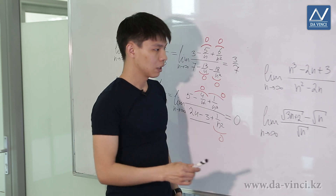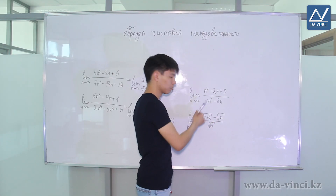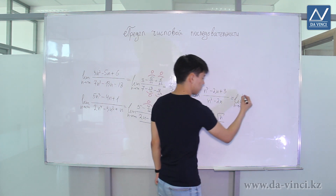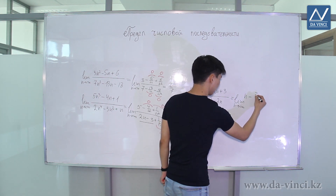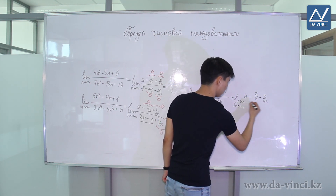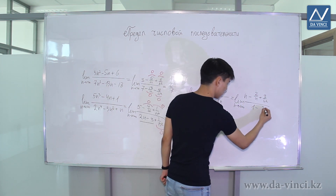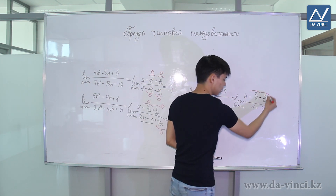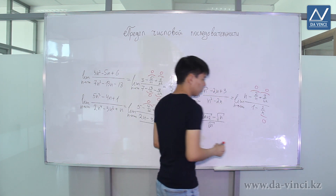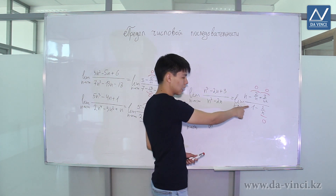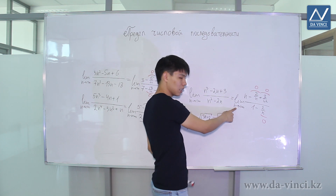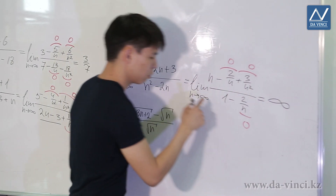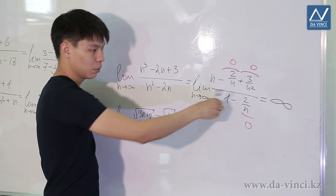For the third example we divide by N². The numerator becomes (N−2)/N² + 3, giving 1/N − 2/N² + 3. The denominator becomes 1 − 2/N. As N→∞, terms go to 0 and we have N/1, so the limit as N→∞ of N is infinity.